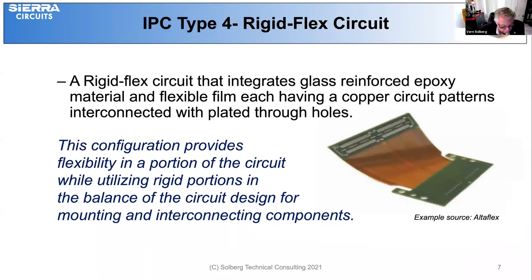Type 4 is a little more complex — now we're getting into rigid flex. The rigid flex can consist of a flexible circuit laminated between two or more layers of epoxy glass circuit sections with plated through holes for interconnect. The configuration provides flexibility in a portion of the circuit while utilizing rigid portions for the balance of the circuit design and for mounting and interconnecting components.